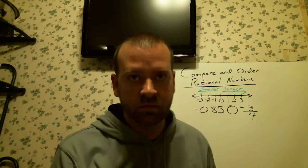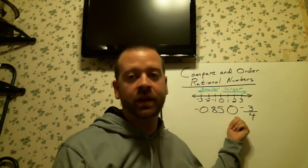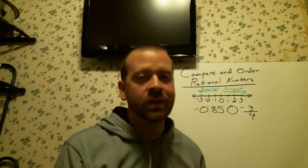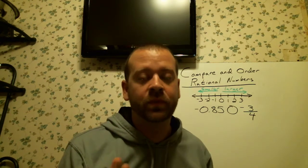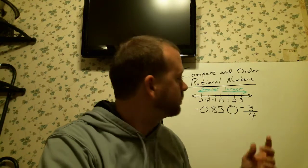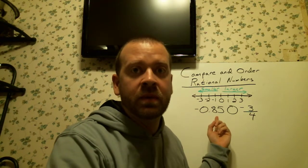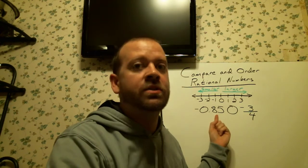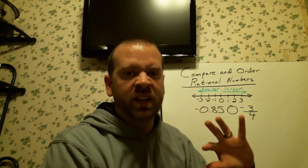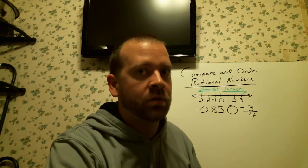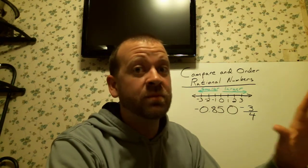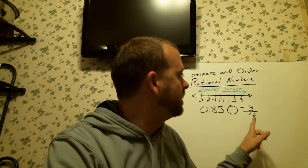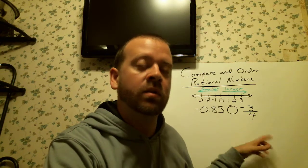That just looks plain icky, doesn't it? We've got a decimal and we're comparing it with a fraction, and it's not so easy either because they're both negative. We can do two things: one is we can make them both fractions by taking 85-hundredths and making it into a fraction, but that involves a bunch of simplifying. The easier approach is to take the fraction and make it into a decimal, then compare the two.